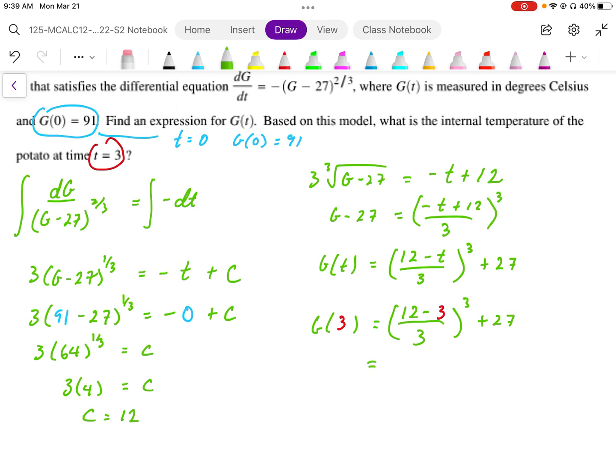So 12 minus 3 is 9, divided by 3 is 3, cubed is 27, plus 27. So the temperature we get is 54 degrees Celsius.